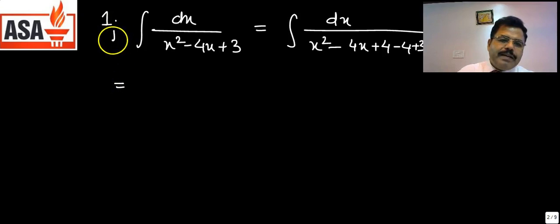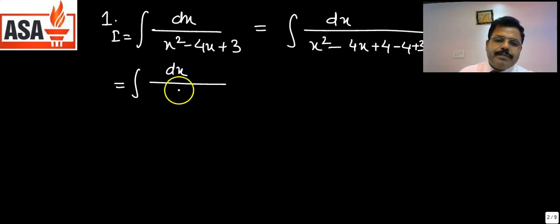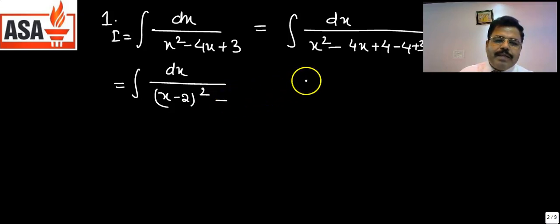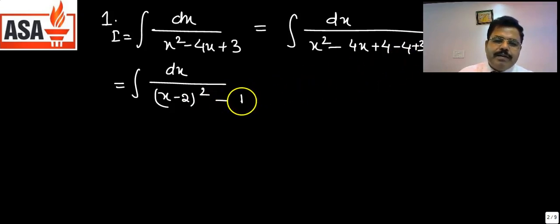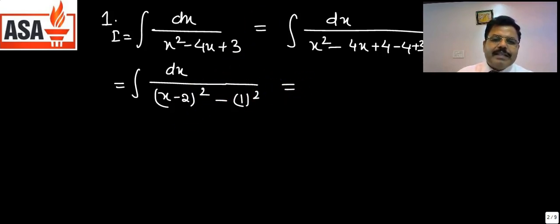So the integration becomes dx upon x² minus 4x plus 4, which gives us (x minus 2)² in the denominator, and plus 3 minus 4 gives minus 1, so it becomes (x minus 2)² minus 1².